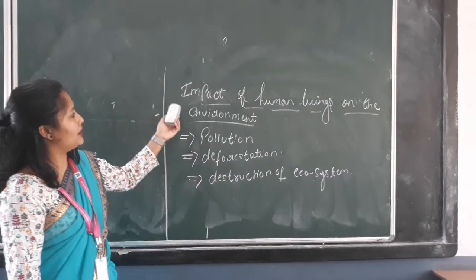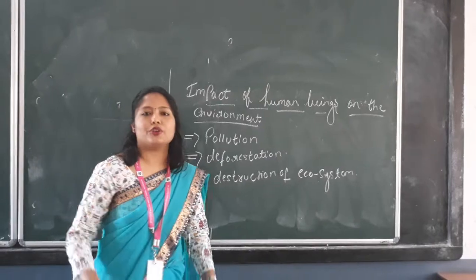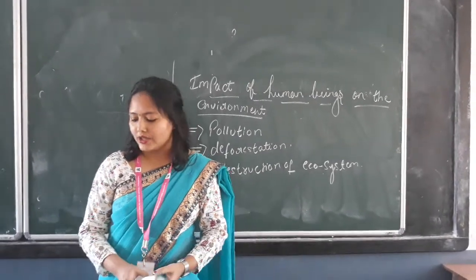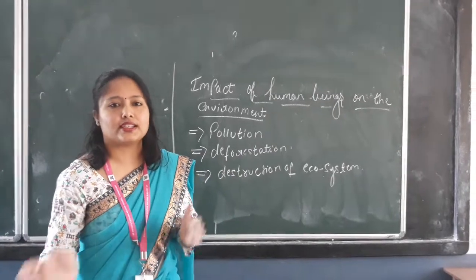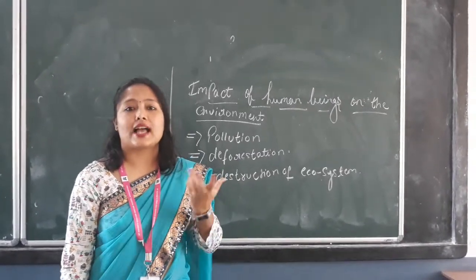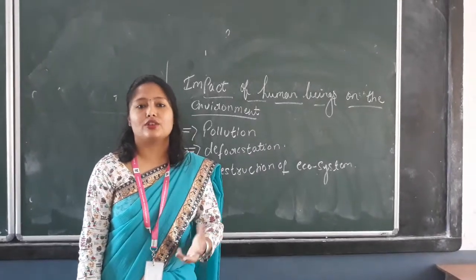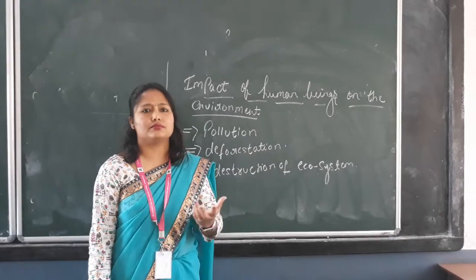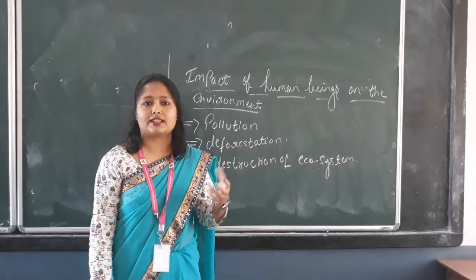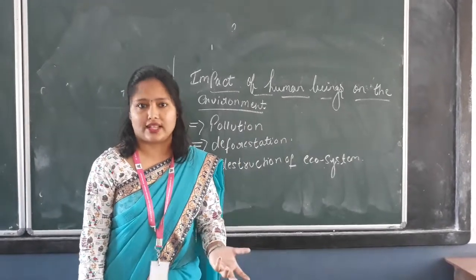Next we have the impact of human beings on the environment — how humans have affected this beautiful environment. As you all know, the environment is given by nature. Natural things — different kinds of disasters, natural calamities, or cyclones — everything that hits earth is given from the environment, and we are bound to take that.